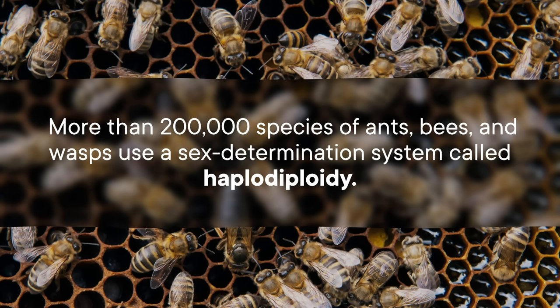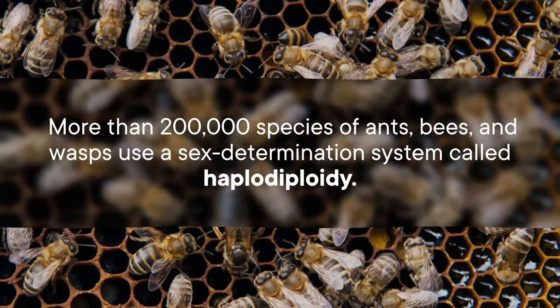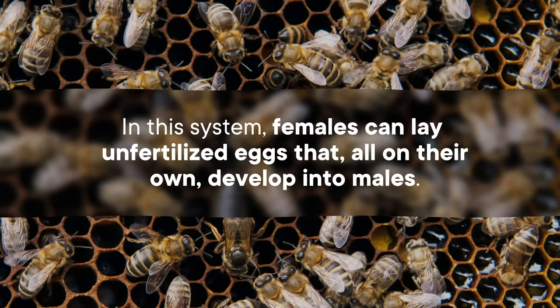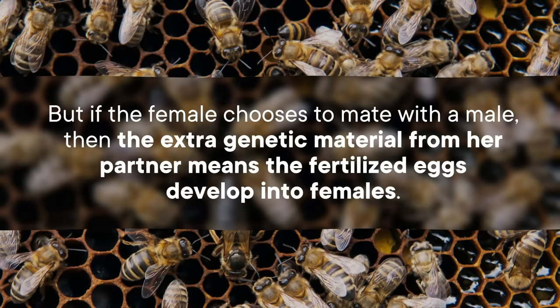As a final example, more than 200,000 species of ants, bees, and wasps use a sex determination system called haplodiploidy. In this system, females can lay unfertilized eggs that, all on their own, develop into males. But if the female chooses to mate with a male, the extra genetic material from her partner means the fertilized eggs develop into females.